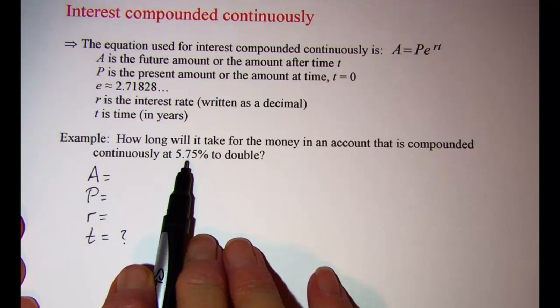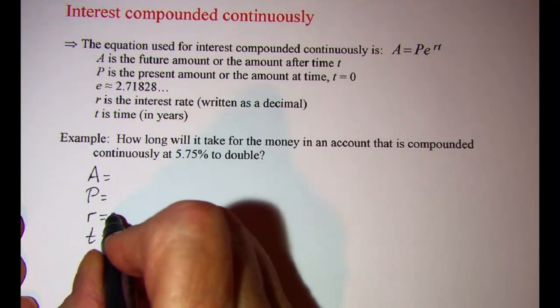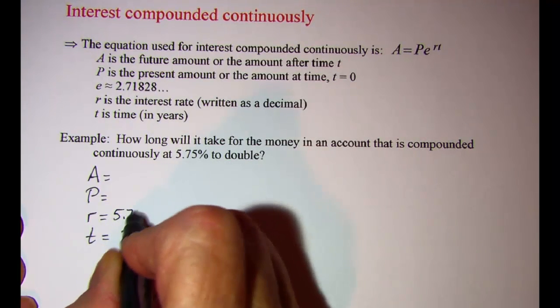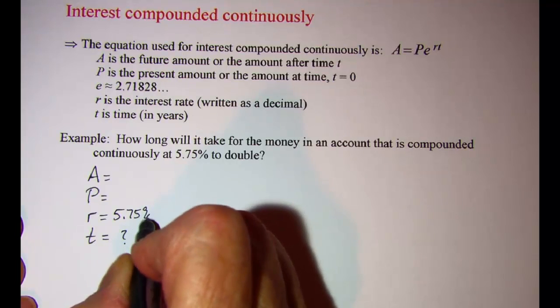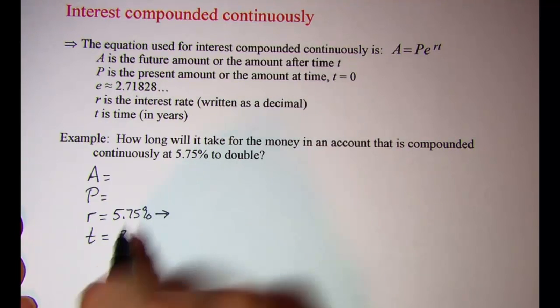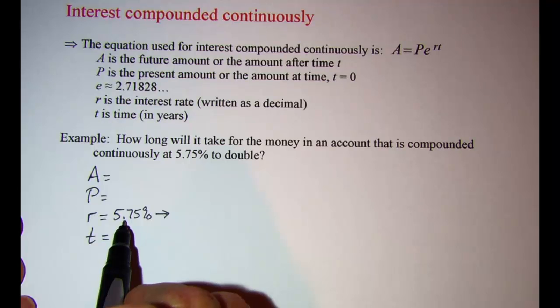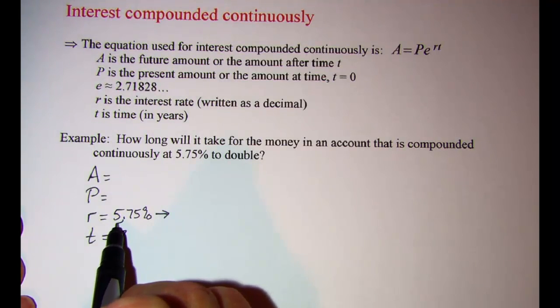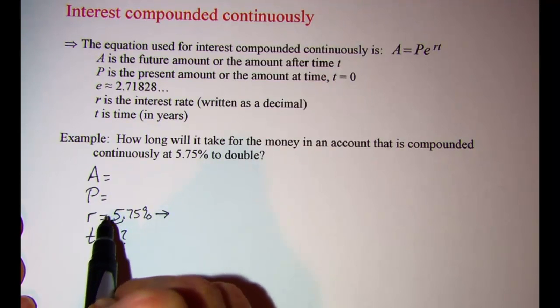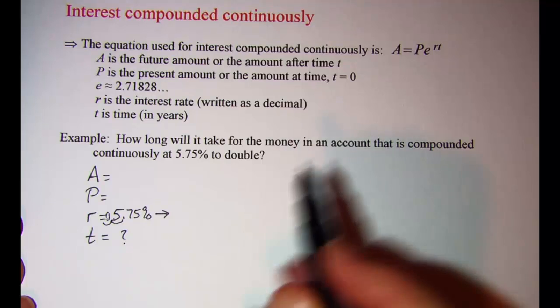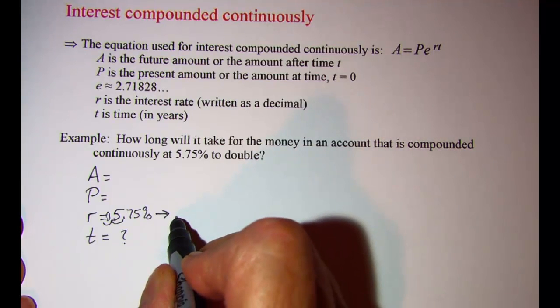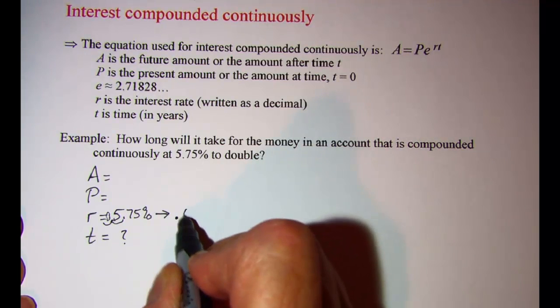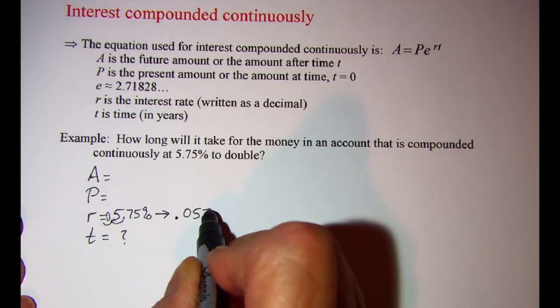And the rate is 5.75%. Now 5.75% written as a decimal, we need to move our decimal point to the left two places. So one place will take it in front of the five, and then another place will have to annex the zero out in front. So our decimal for this rate is 0.0575.